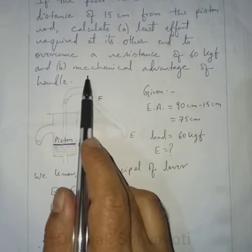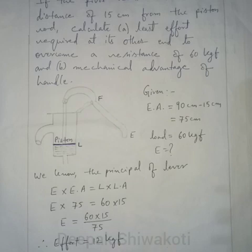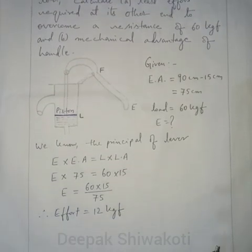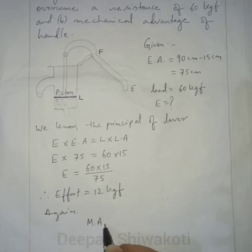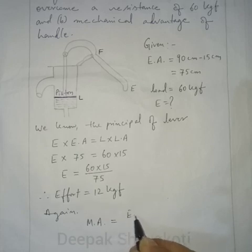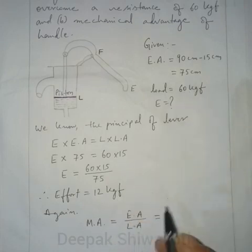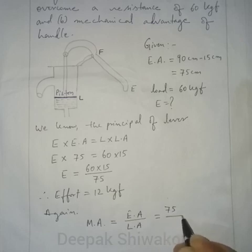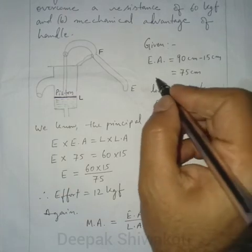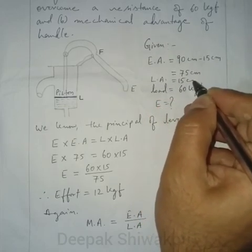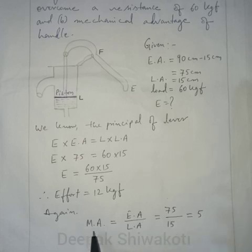Part B asks for the mechanical advantage of the handle — that means the mechanical advantage of this water pump. Mechanical advantage is given by effort arm divided by load arm. Effort arm is 75 cm and load arm is 15 cm. When we cancel, we get 5. There is no unit for mechanical advantage.